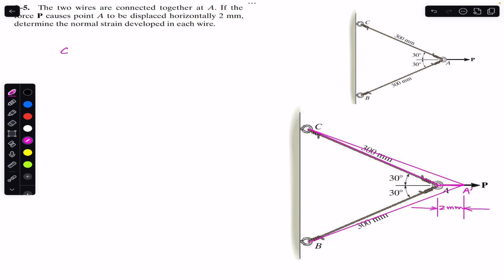This means that if the change in length of both wires remains the same, the normal strain in both wires will remain the same as well. So we can say that the normal strain in AB equals the normal strain in AC, and that equals the change in length of AC divided by the original length of AC. The change in length of AC equals L_A'C minus L_AC, divided by L_AC.